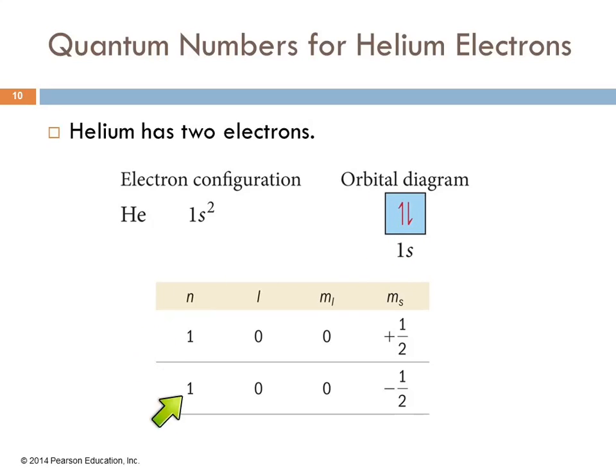If we compare the quantum numbers here, they both have N equals one, L equals zero, M sub L equals zero. One of them is plus one half, one of them is minus one half.